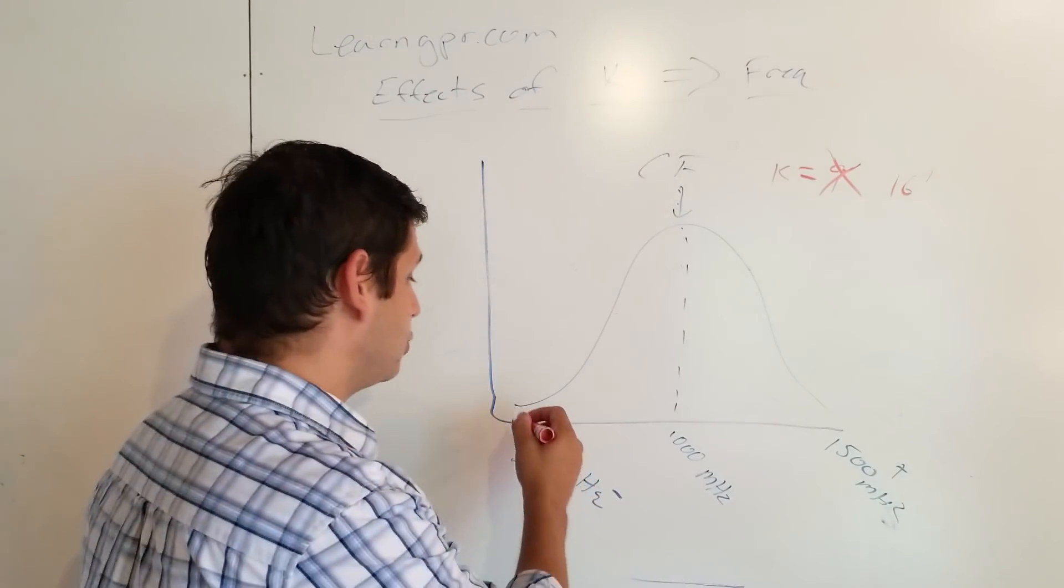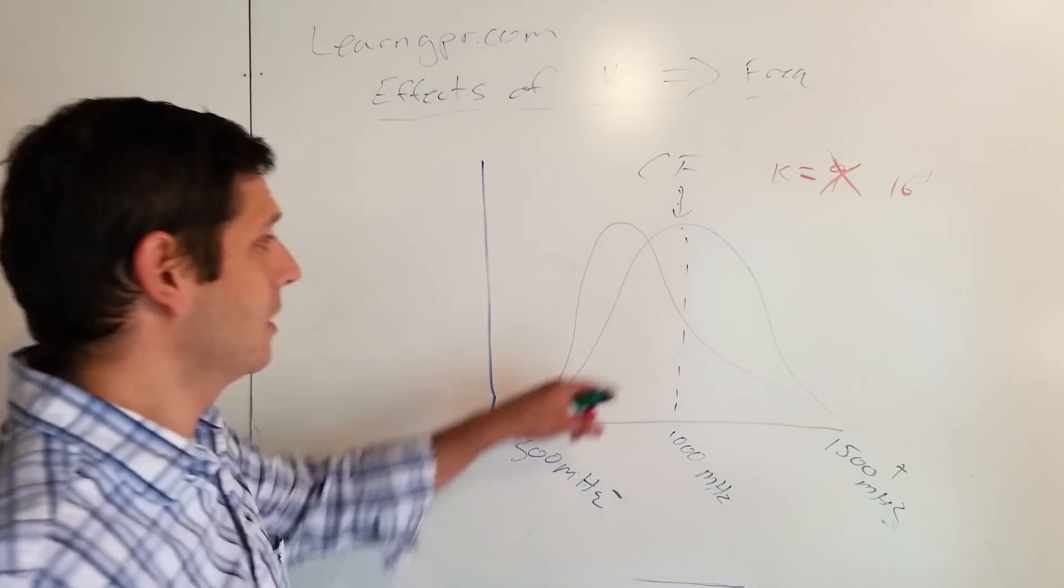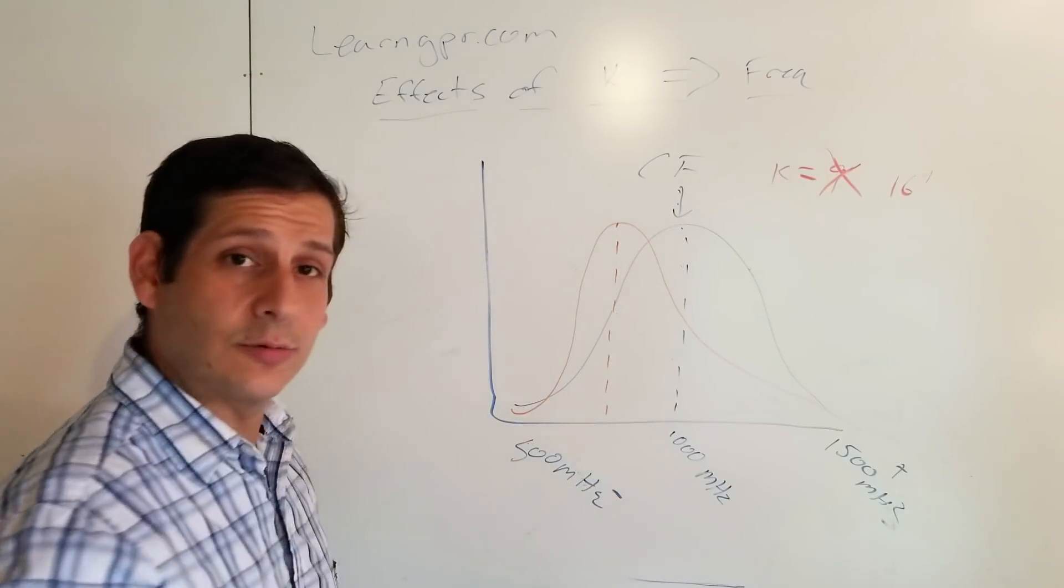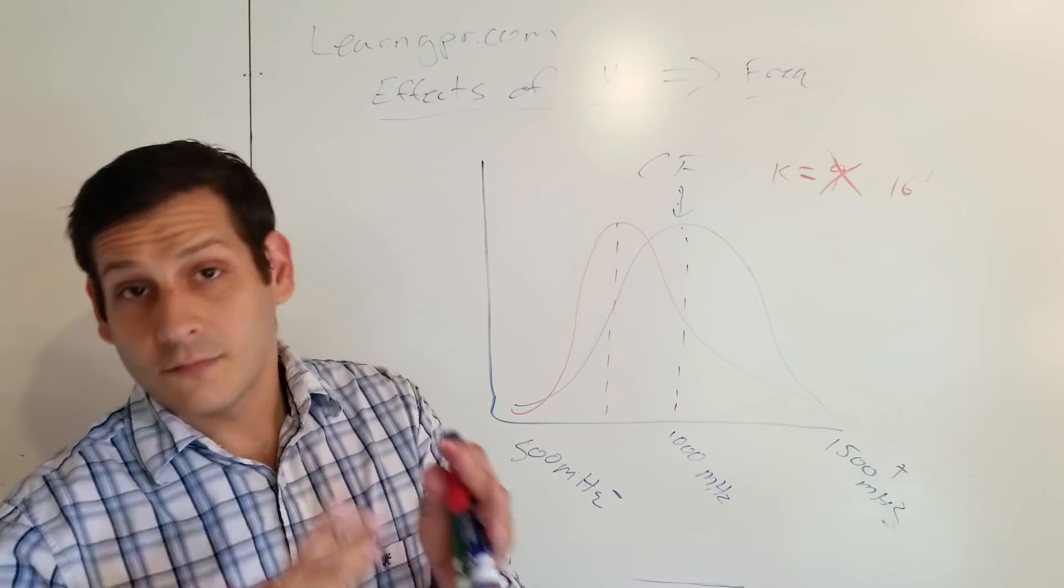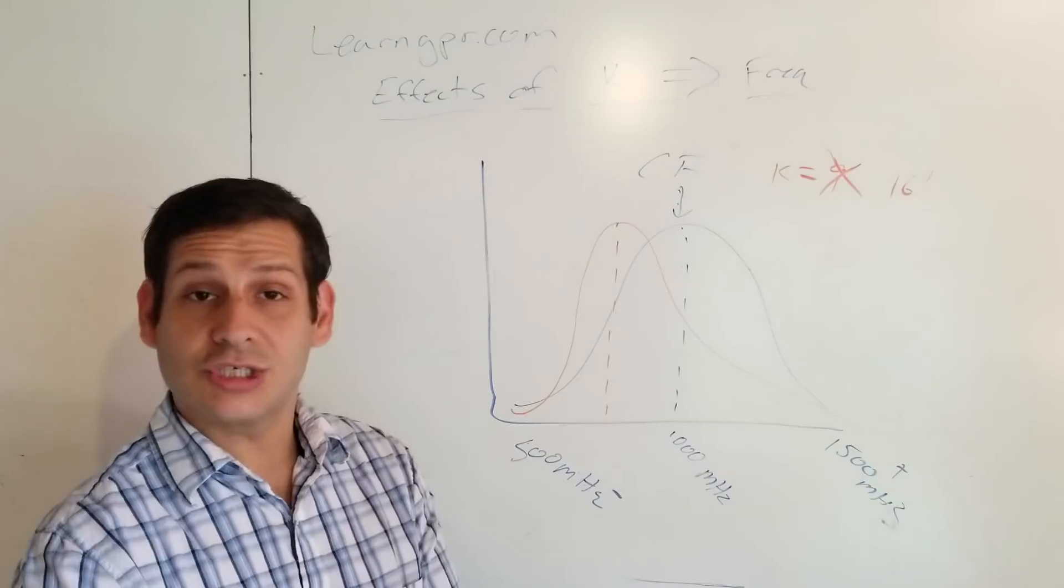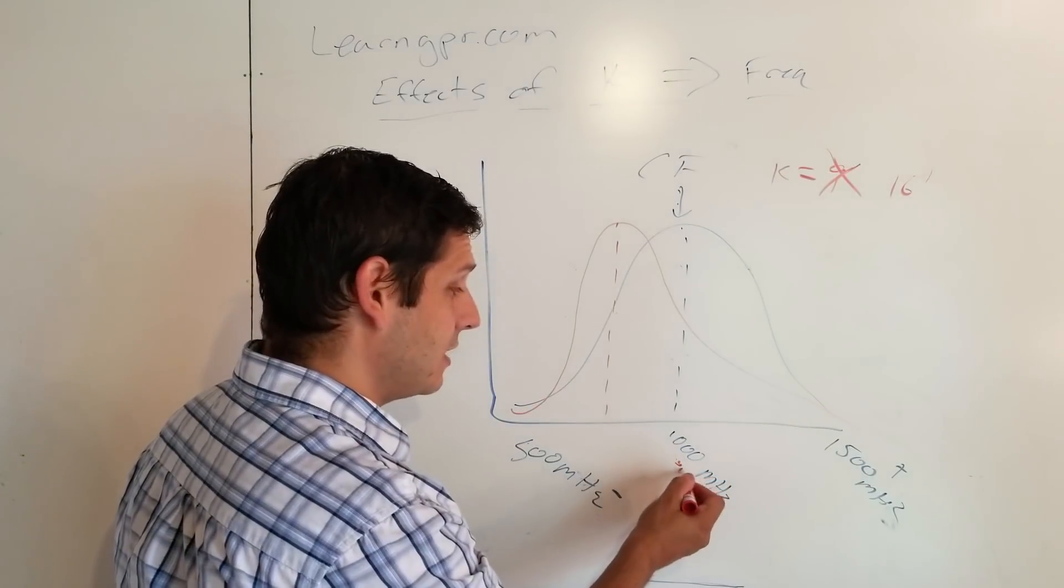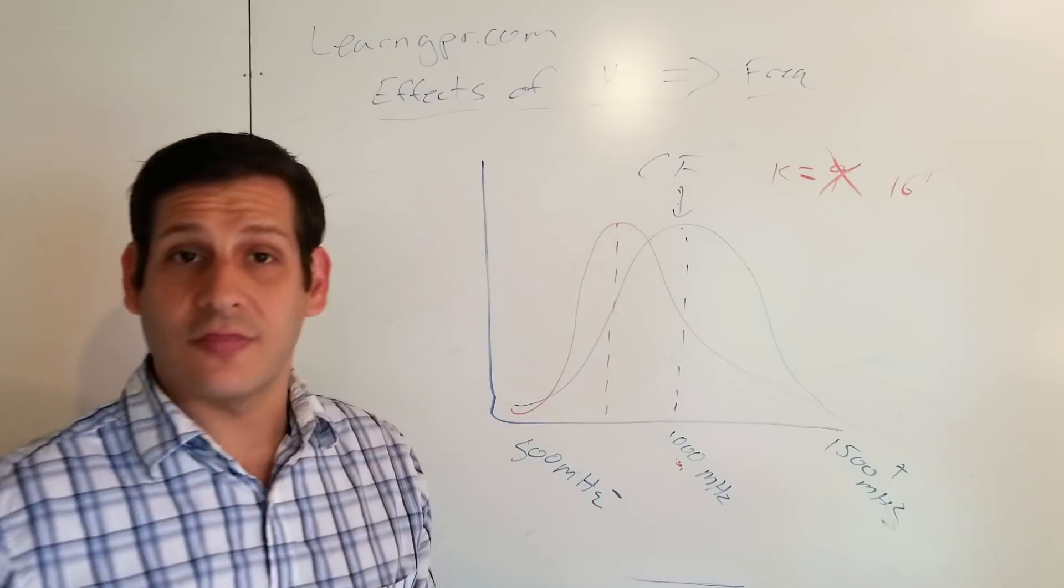Well, here's what happens. This downshift looks like this. Now, you have this central frequency shifted to a lower frequency. The central frequency is shifted to a lower frequency. And so it's no longer 1000 as the central frequency. It's something that's less than 1000.